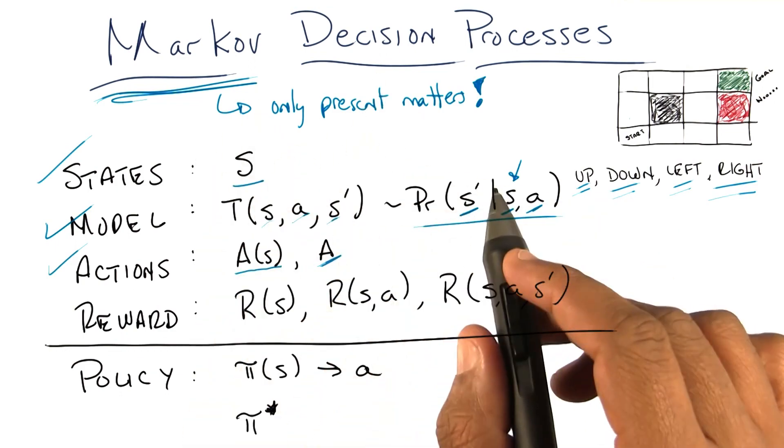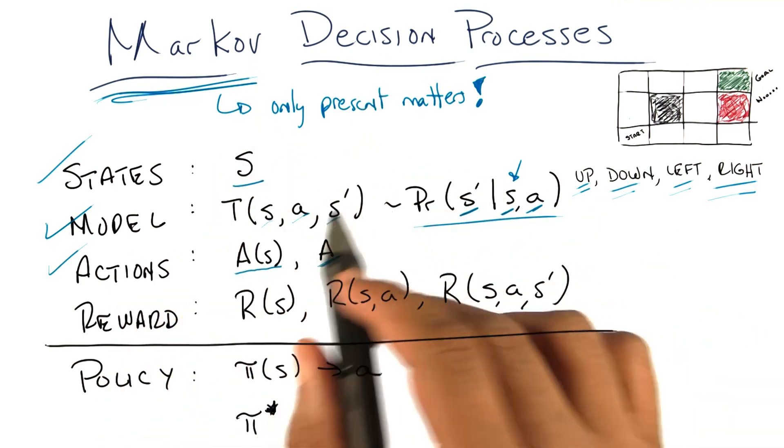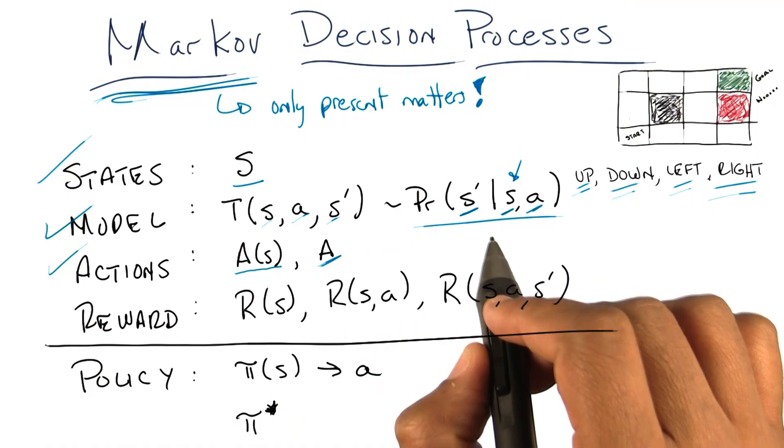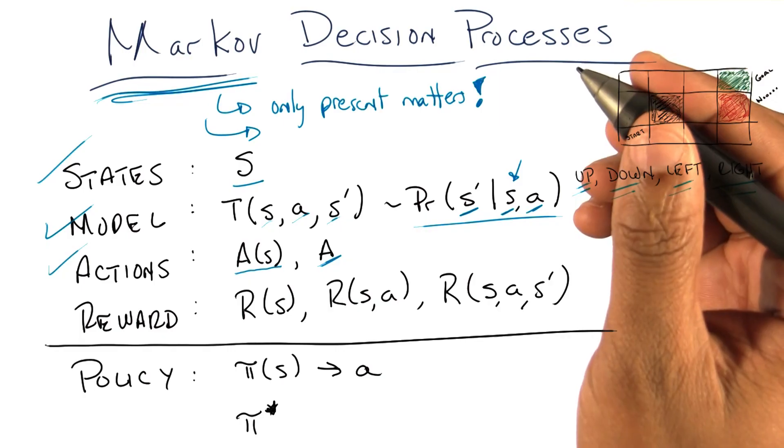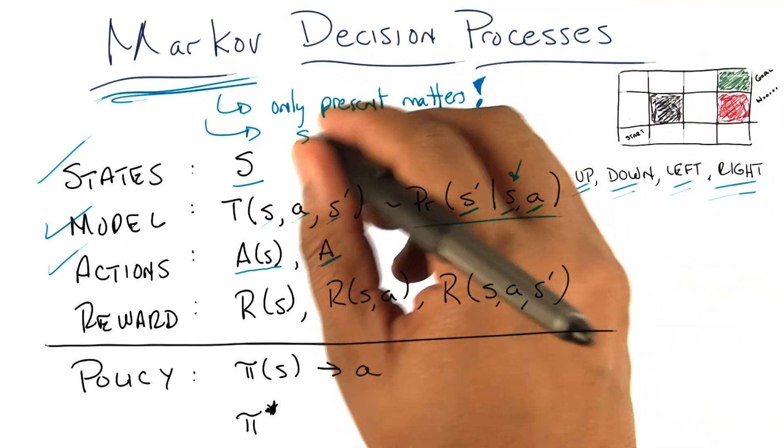But I snuck in something else, Michael. What I snuck in is this idea about the transition model is that nothing ever changes. So, the second property that matters for Markov decision processes, at least for the sets of things that we're going to be talking about in the beginning, is that things are stationary.